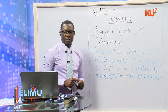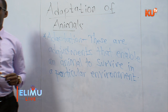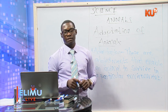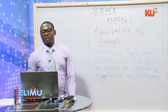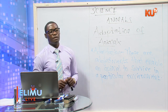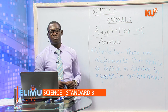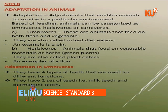When we look at feeding, we can categorize animals as either omnivorous, carnivorous, or herbivorous. Omnivorous animals are animals that feed on both flesh and vegetables. An example of an omnivorous animal is a pig.